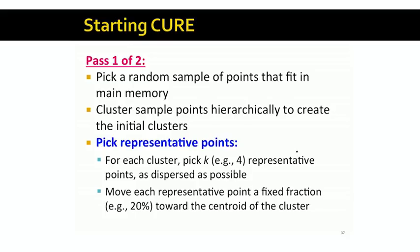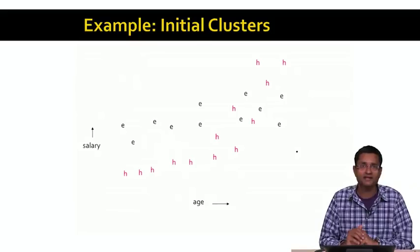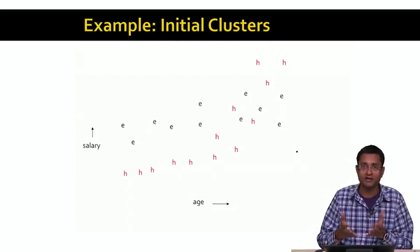Once we've picked these representative points, what we're going to do is create synthetic points. These synthetic points are obtained by moving each representative point a certain distance towards the centroid of the cluster. We have the cluster, we know its centroid, and we have these k representative points. We take each representative point and create a synthetic point by moving the representative point a fixed fraction — maybe 20% — towards the centroid of the cluster. The 20% here is a parameter to the algorithm.